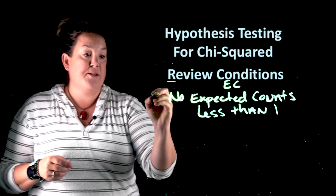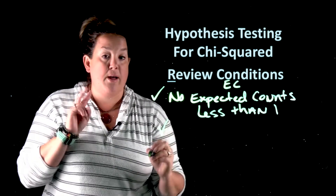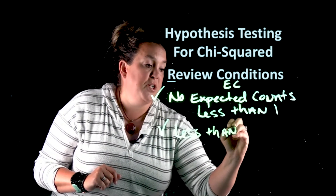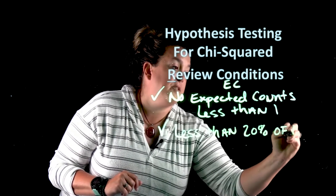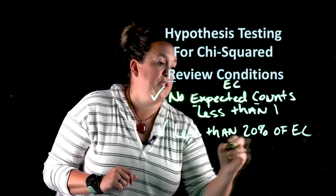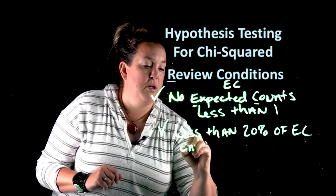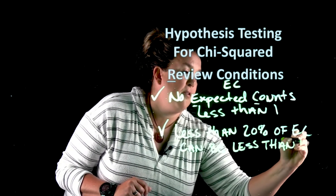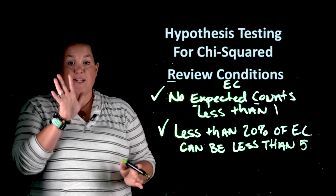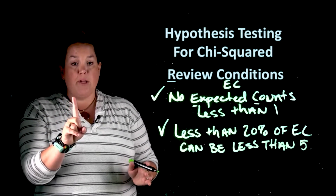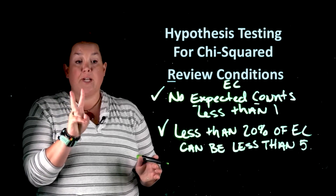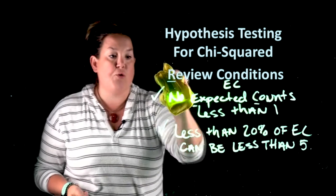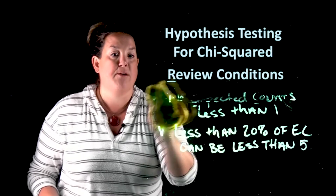The second condition — and both of these have to be true — is that less than 20 percent of expected counts (EC) can be less than five. So those are the rules: no expected count can be less than one, and you can't have more than twenty percent of cells with an expected count less than five. Next we'll look at how to calculate those expected counts and that percentage.